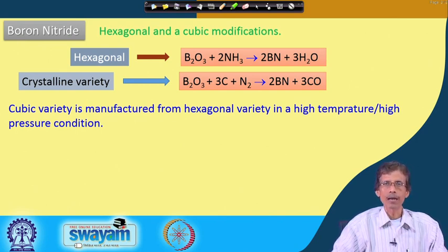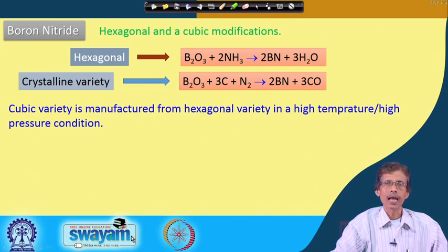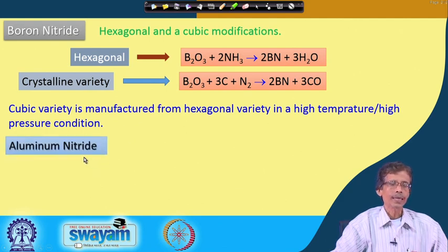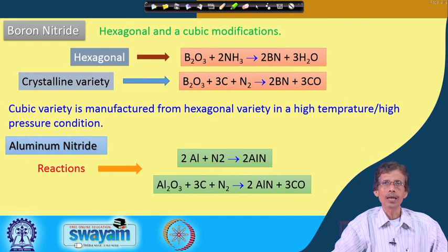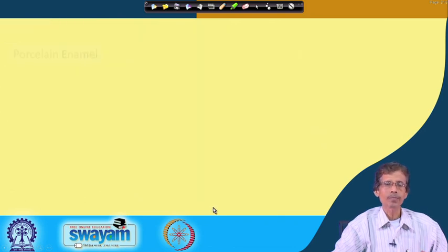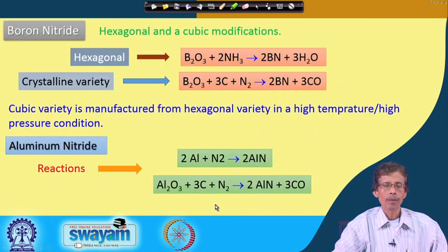The solid-state structural change is achieved through higher temperature or pressure, since the crystal structure must change during transformation. For aluminum nitride, the reaction again involves direct reaction with nitrogen gas (N2), or carbon reduction of alumina (Al2O3). All these reactions — for making nitrides — are straightforward once we understand them, and all these processes apply for different ceramic materials.